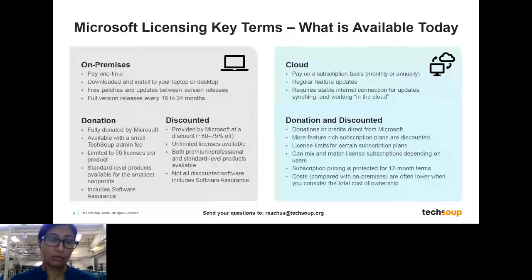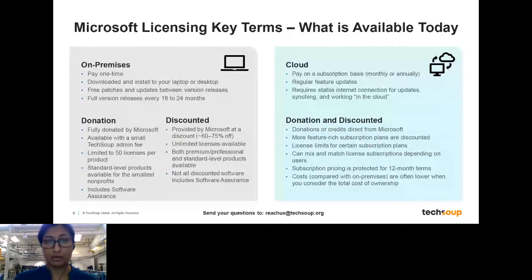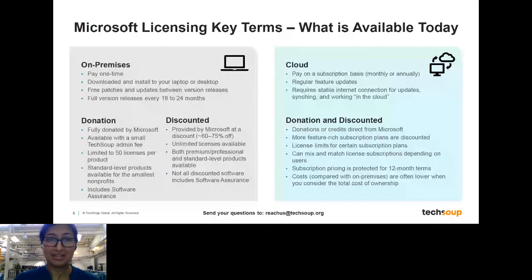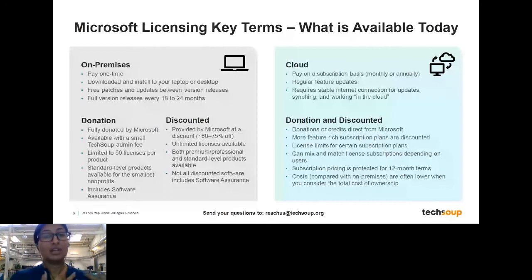You can also choose whether or not you want Software Assurance. On the cloud side, there are both donated and discounted offers available, with many great solutions. One of the greatest things about cloud licensing is that you can pick and choose — if some team members only need certain applications, you can get just that for them. If others are serving IT functions and need more security features, you can get higher-level licensing. You can really mix and match based on your team's needs.